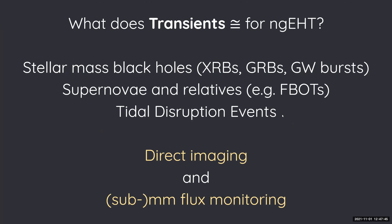So what does Transients mean in the context of NG-EHT? Transients essentially means stellar mass objects. We're interested in stellar mass black holes — black holes in X-ray binaries, gamma ray bursts, gravitational wave bursts, merger events, relatives in supernovae and other flavors of supernovae such as fast blue optical transients. And also peripherally within our remit, tidal disruption events, which a lot of people are interested in.